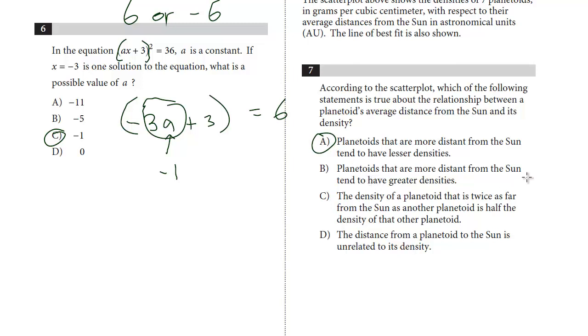Let's look at the other choices. Planetoids that are more distant from the sun have greater density. No, this is the opposite of the correct choice. So that's out. C is a specific answer: the density of a planetoid that's twice as far from the sun as another planetoid is half the density of that. Again, this is too specific. You'd have to go back and test a couple. But this we know is right. So just in general, when you have a more specific answer and a more broad one and the broad one you know is right, that has to be the choice. And then D, the distance from a planetoid to the sun is unrelated. No, we know it has a negative correlation. A.